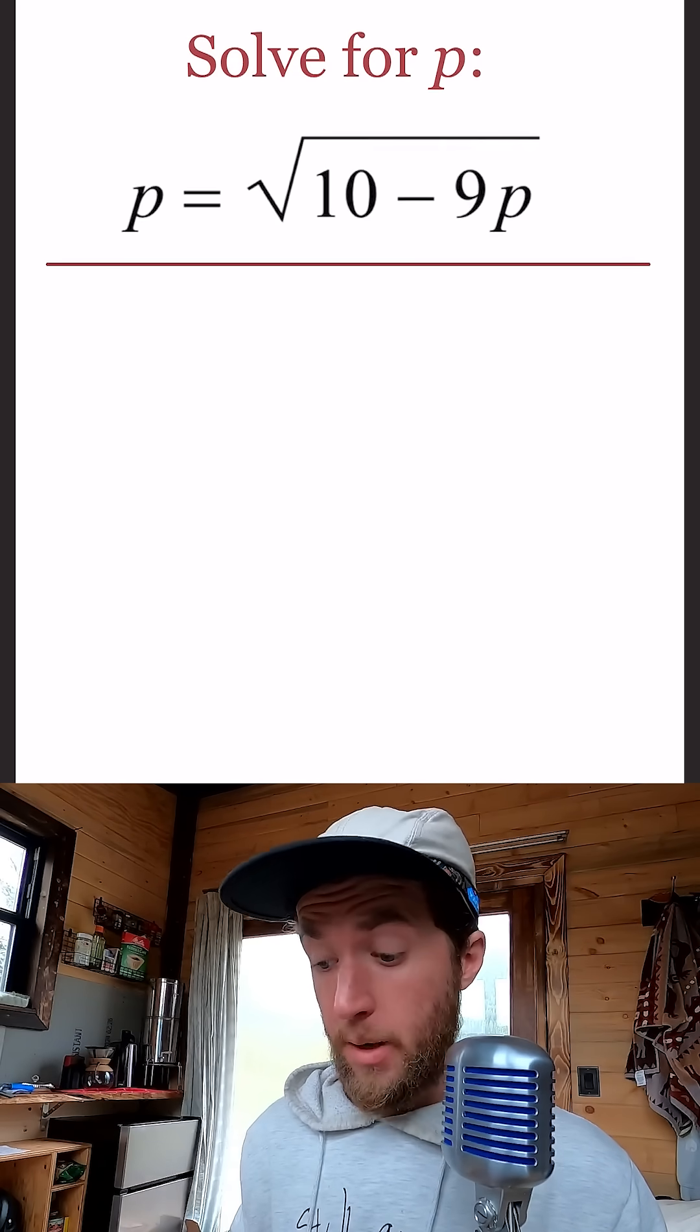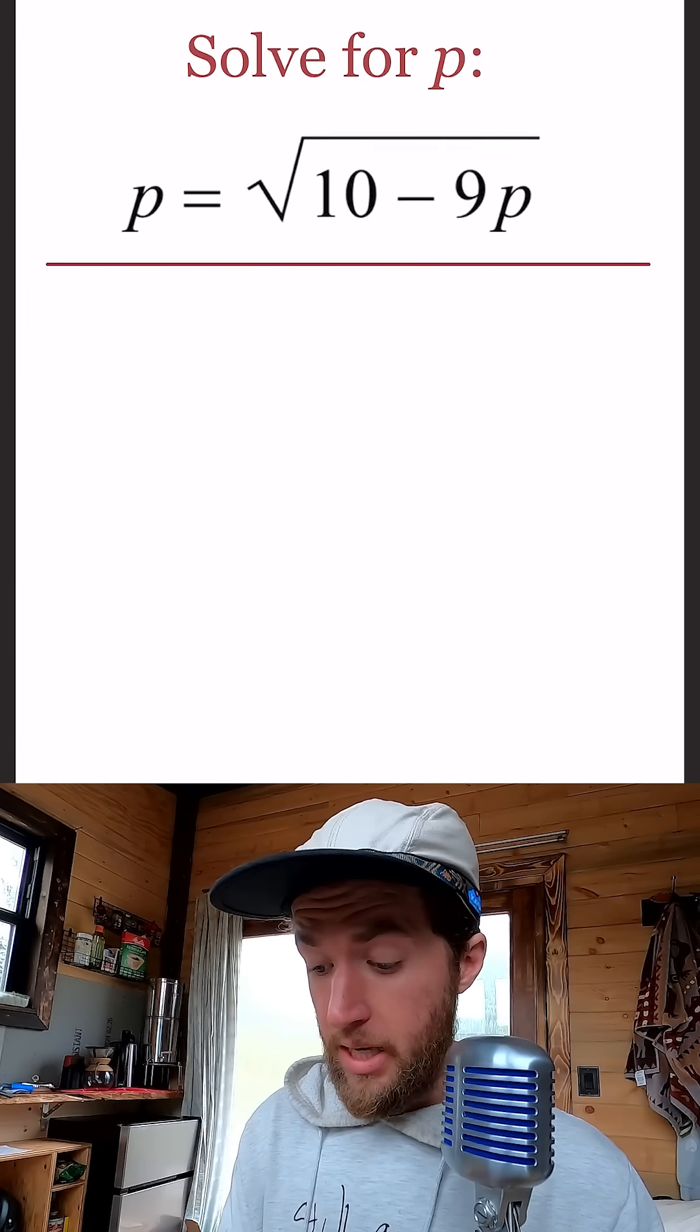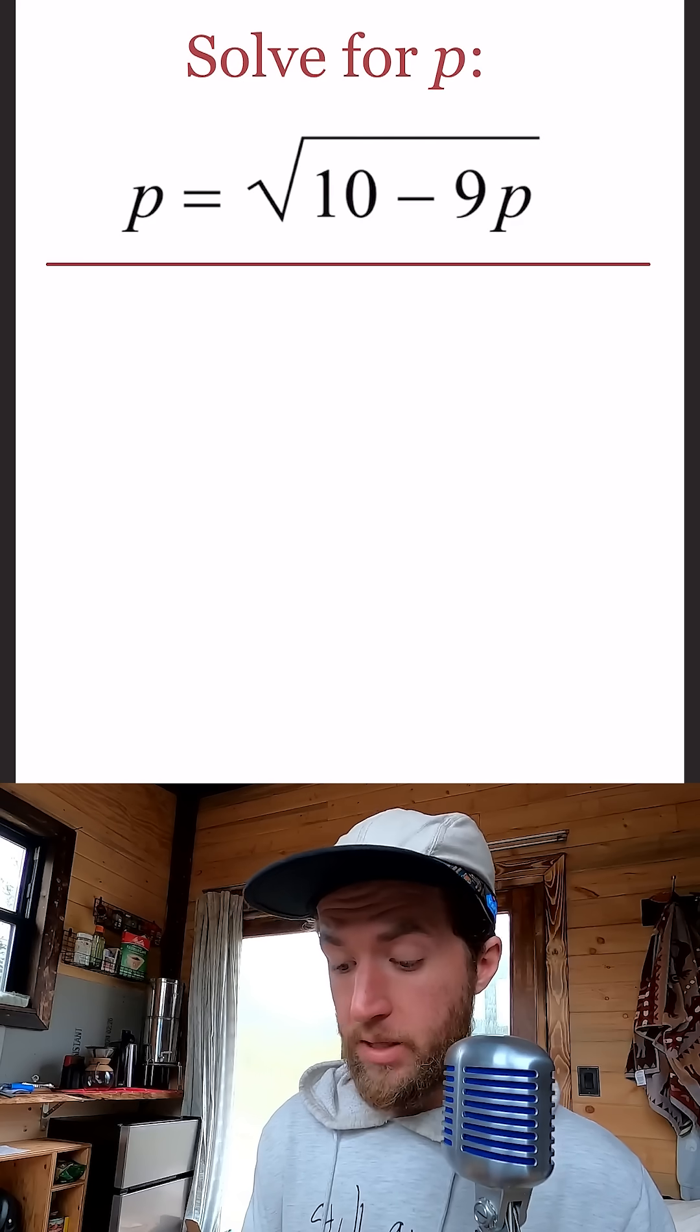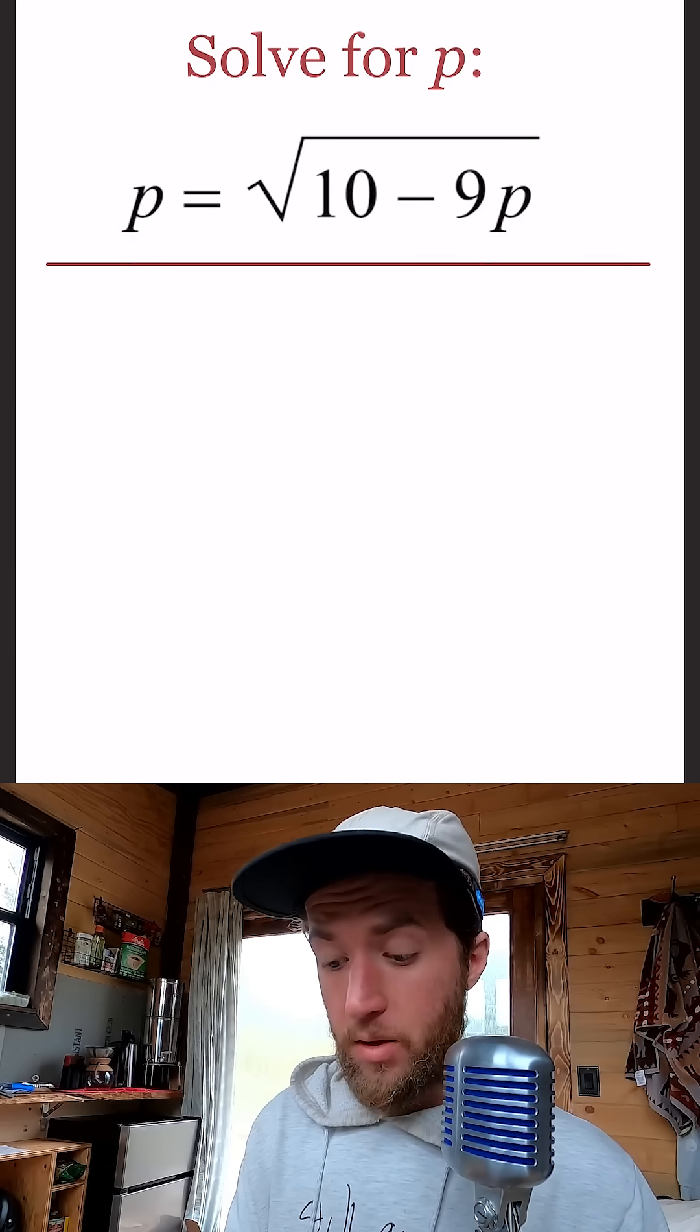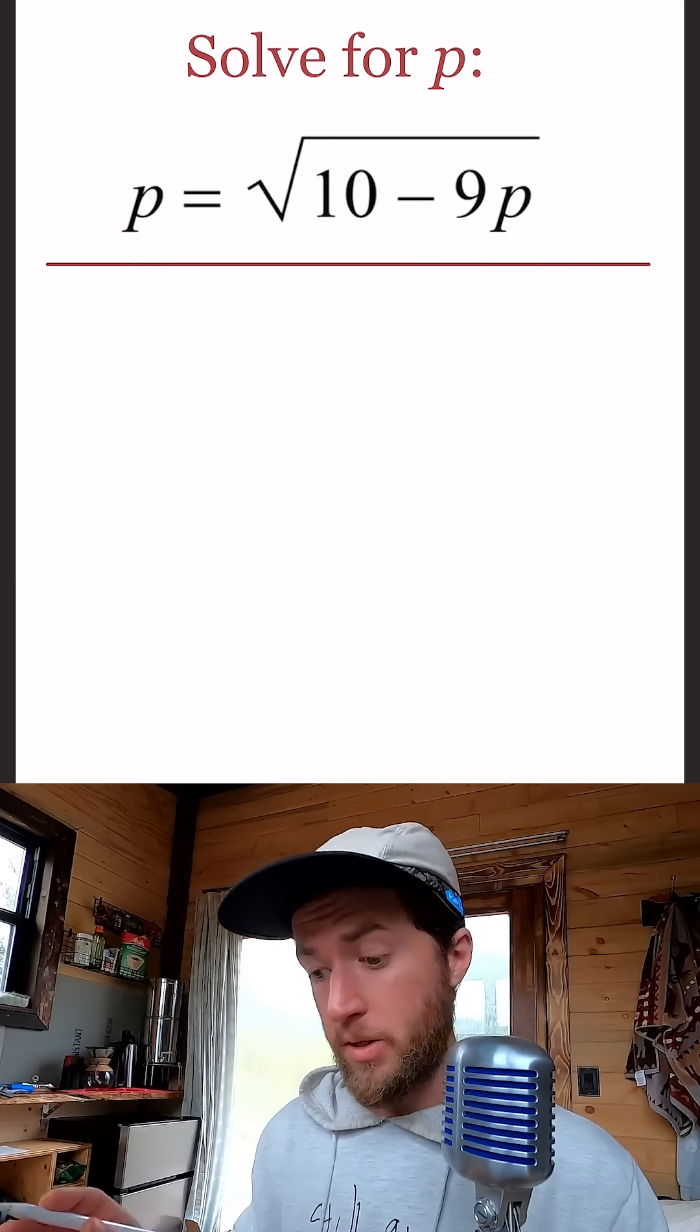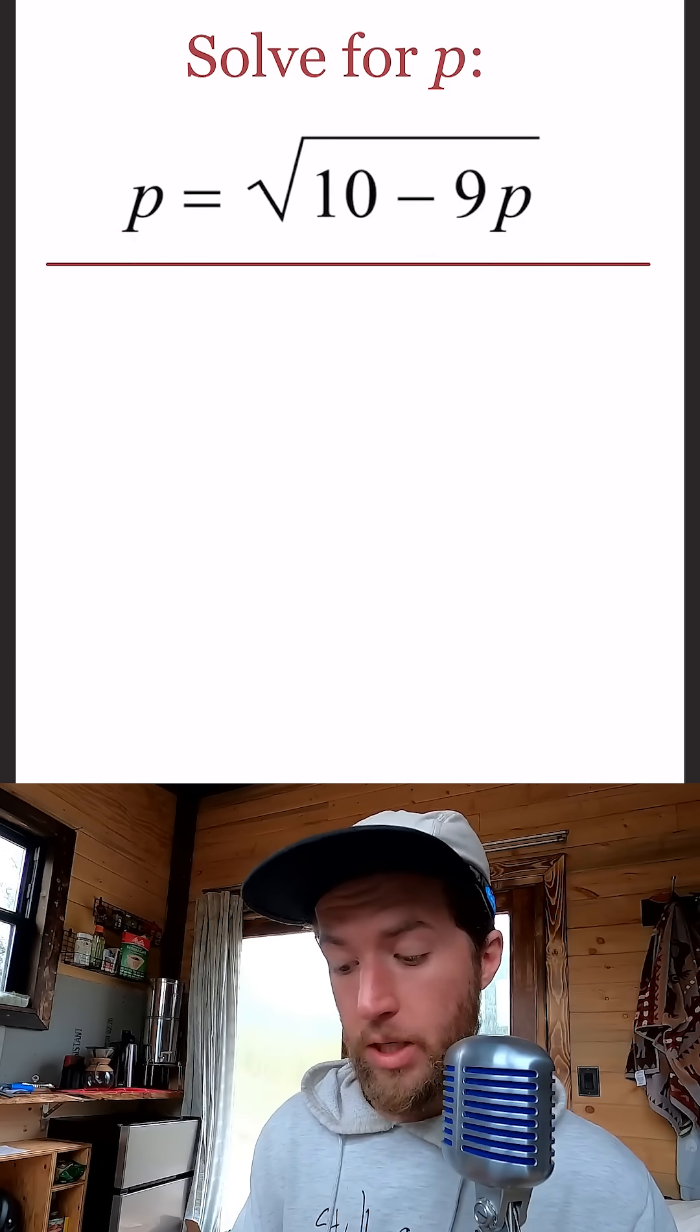All right, another double black diamond problem here. The key to me here, what I look for, is the fact that I have a P outside of the square root and a P on the inside of the square root. So when this all gets said and done, we're going to have different powers of P, end up with a quadratic equation. Let's jump into it.